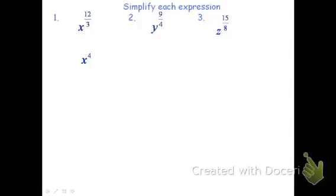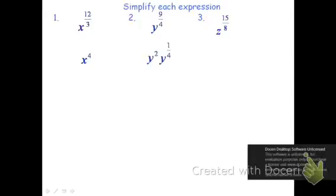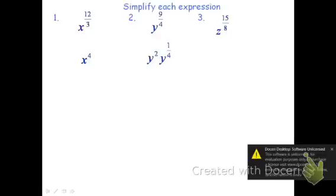The other ones are going to be a little bit tougher. 9 fourths does not reduce to a whole number because 4 does not go into 9 evenly. Instead, 4 does go into 9 twice, so I can say this is y squared, but I have something left over. 4 goes into 9 twice, that makes 8, which means we still have 1 left over to get to 9. The way we write that is we still have y to the 1 fourth, which is the same as y squared times the 4th root of y.